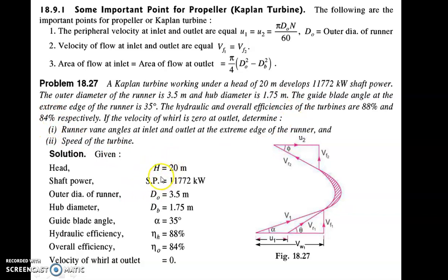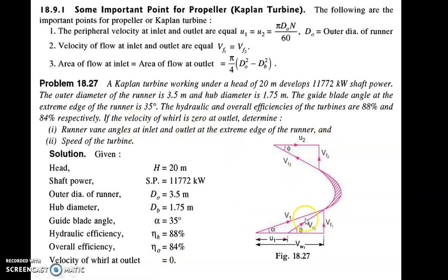The velocity of whirl at outlet Vw2 is equal to 0, meaning beta equals 90 degrees. You need to determine the runner vane angles at inlet and outlet at the extreme edge of the runner, and the speed of the turbine N. Given: H equals 20 meters, shaft power equals 11,772 kW, overall efficiency is 84 percent — from which you can calculate discharge.